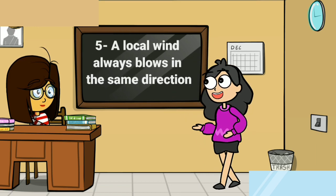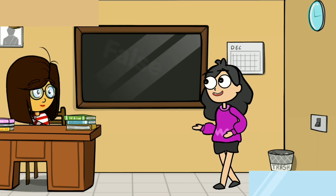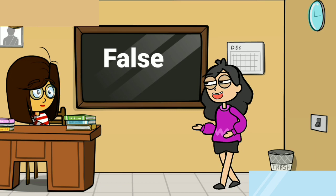Fifth question: a local wind always blows in the same direction. This statement is false, because local winds always change their direction during a day or with a change of speed.